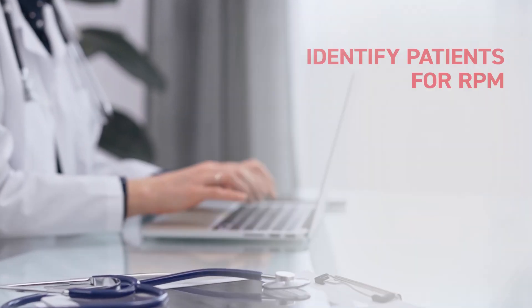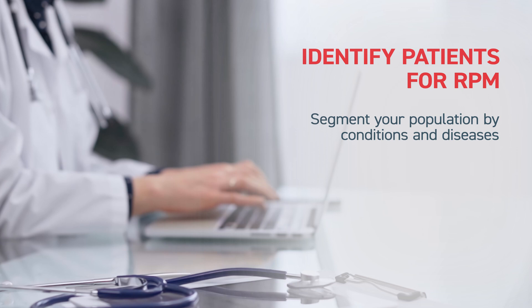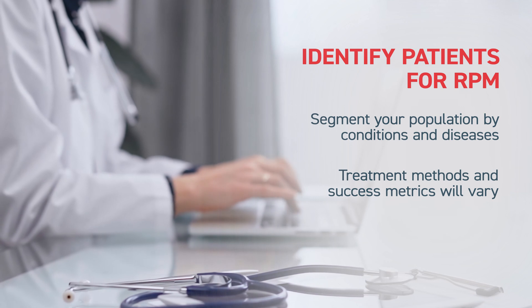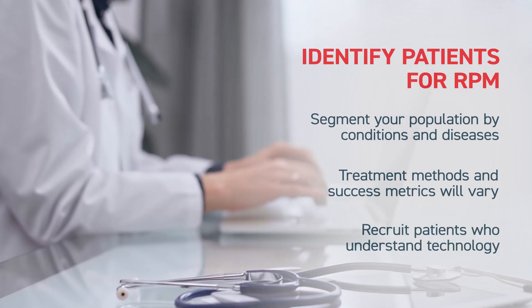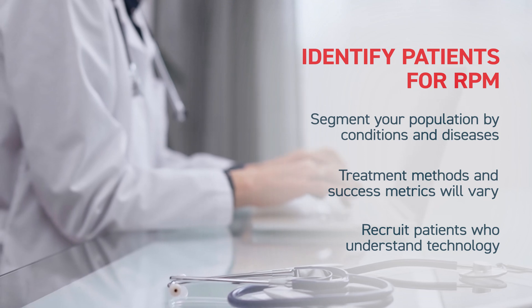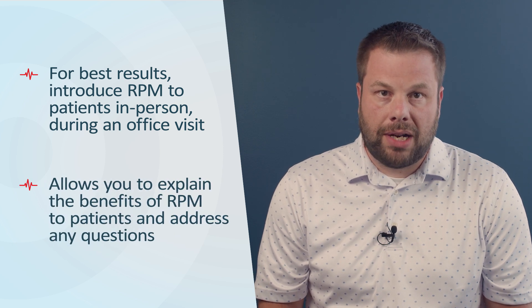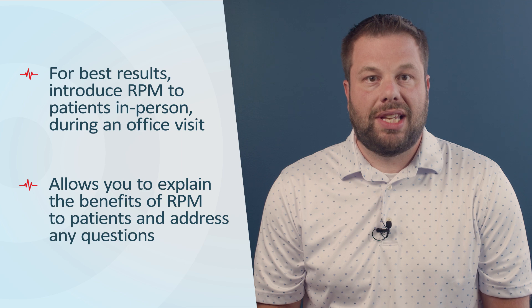Long-term care patients may already be enrolled in a chronic care management or principal care management program. Patients can be enrolled in RPM at the same time, and Medicare will reimburse for both programs in the same month. Next, you can segment your population by conditions and diseases. Patients with different conditions have different goals, so your treatment methods and success metrics will vary. You'll also want to identify patients who understand technology — while RPM devices are typically easy to use, you'll want to recruit patients who can learn quickly and adapt. You can invite patients to join your RPM program in person via an outreach campaign or over the phone, and for best results, introduce the program in person during an office visit to explain the benefits and address questions.